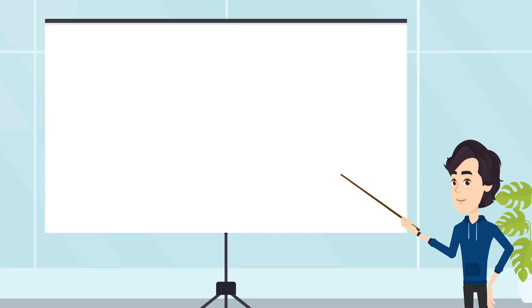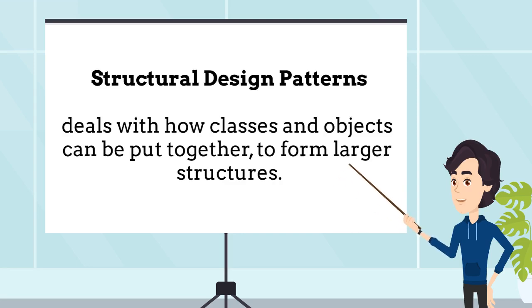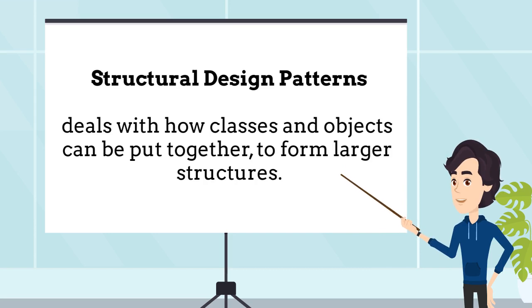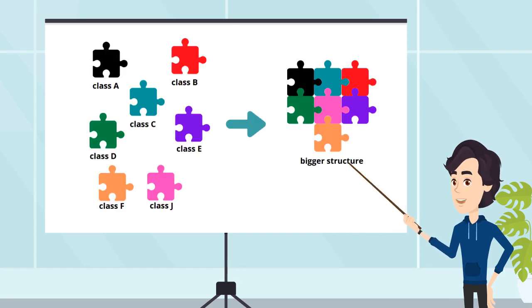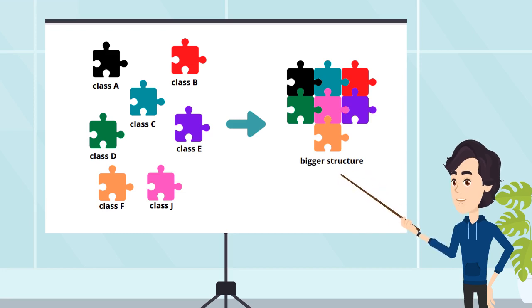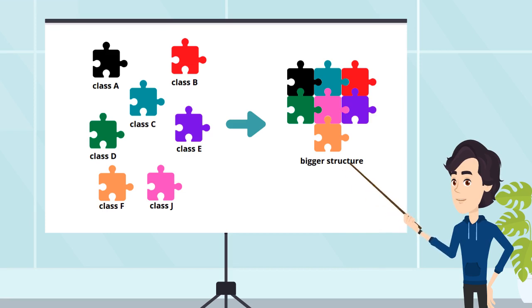The second category is the Structural Design Patterns. It deals with how classes and objects can be put together to form larger structures. Working with multiple classes and multiple objects of different types is not always an easy task — sometimes they just don't fit. That's why we use structural design patterns, which assembles multiple classes into bigger working structures.